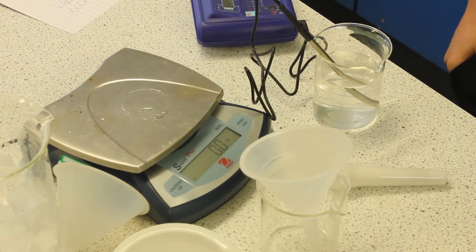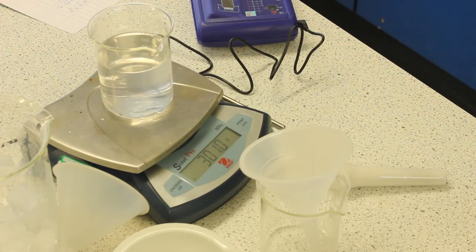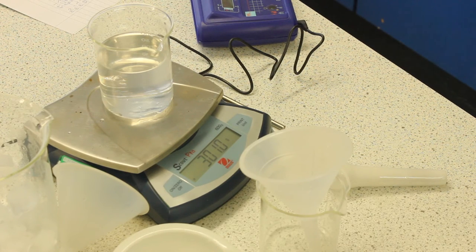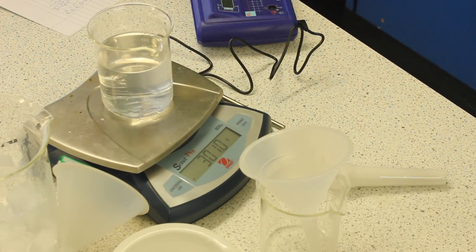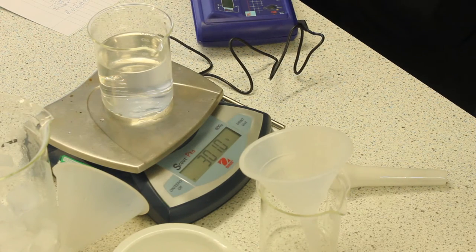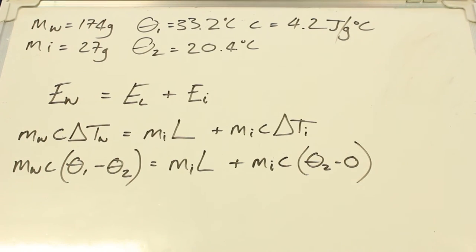Okay. The last bit of data we need is the total mass of the beaker and the water and the melted ice because that's going to be used in our calculation as well. So this is our kind of most accurate go for this experiment.